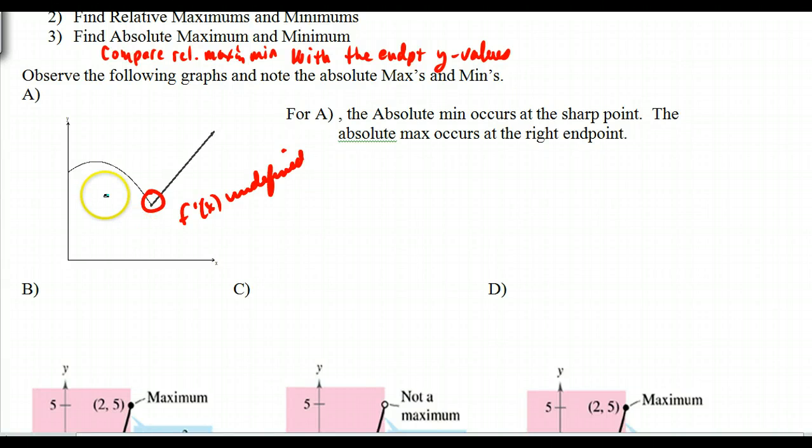Now if we look at the absolute maximum, well, if I compare this relative maximum with this y value of this endpoint, well this one's going to be the absolute max. It's not a relative max because it has to be on both sides, but it is the absolute max because it is the highest y value. Where does that occur? It occurs at an endpoint.